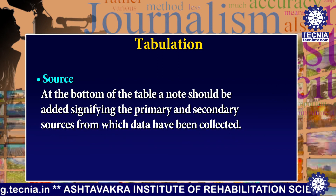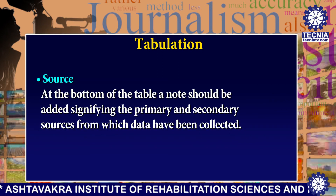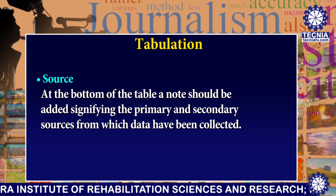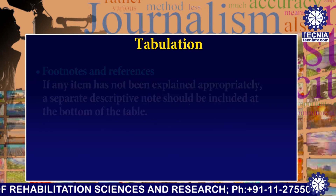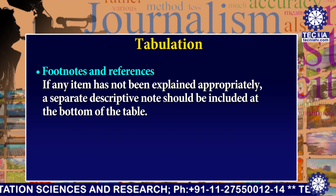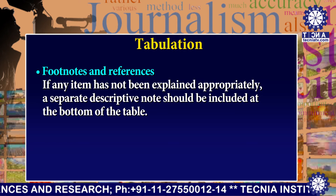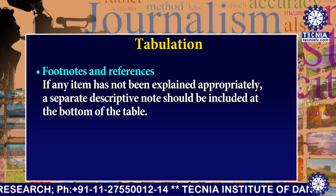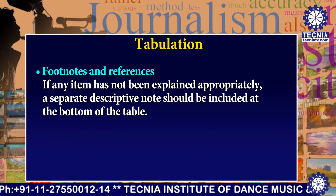Next is the source. At the bottom of the table, a note should be added signifying the primary and secondary sources from which data have been collected. Another element is footnotes and references. If any item has not been explained appropriately, a separate descriptive note should be included at the bottom of the table.